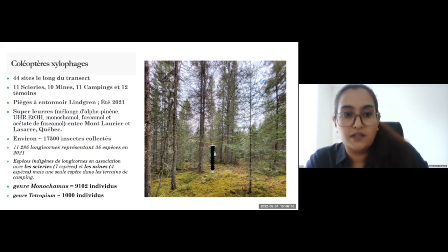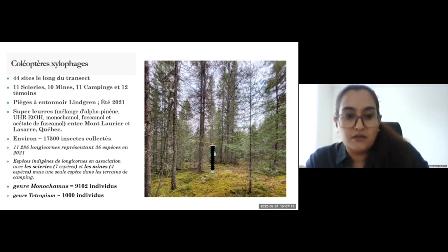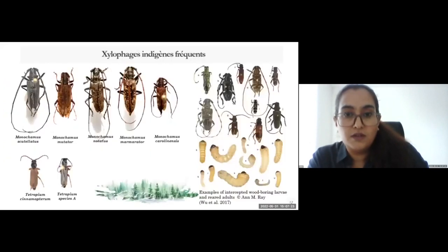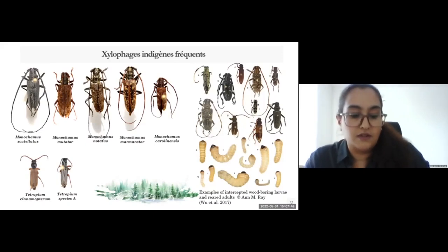For the 2021 sampling, we collected around 17,500 insects, among which 11,286 were longhorn beetles comprising 36 species. Seven species were more common in sawmills, four were more common in mines, and one species was more common in camping grounds. From the genus Monochamus, we collected around 9,102 individuals, and from the genus Tetropium, around 1,000 individuals. These figures show five Monochamus species and two Tetropium species, along with adult longhorn beetles typically found in the galleries of conifers. The adult beetles differ, but the larvae are the most important stage causing tree damage.